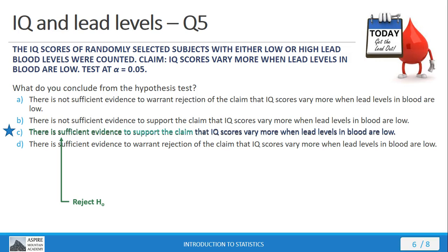We rejected the null hypothesis. So there is sufficient evidence. We have a one-tailed test. So we support the claim. And then the rest of the statement just comes from a restatement of the claim itself.